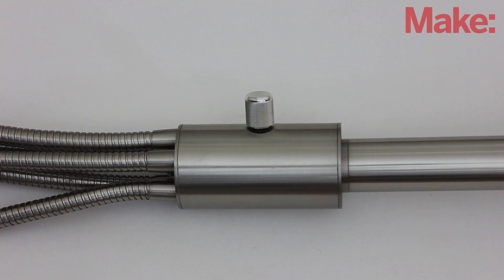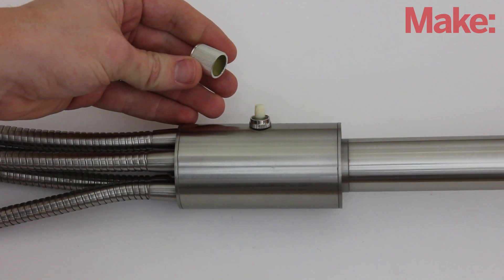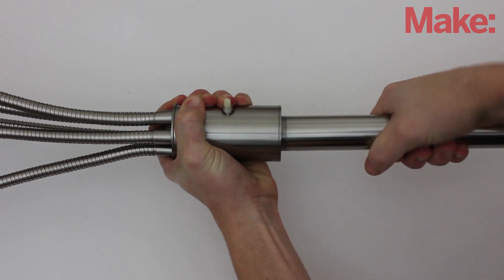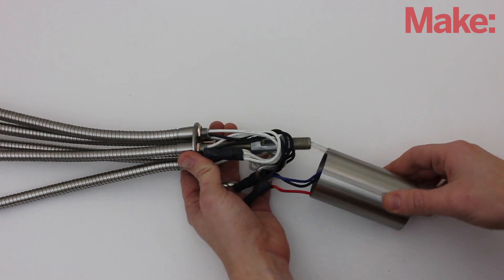First, we need to disassemble the lamp stand. Start by removing the knob and the nut that are holding the switch in place. Then, unscrew this section from the base of the stand. At this point, I was able to just pull the pieces apart and expose the wires.